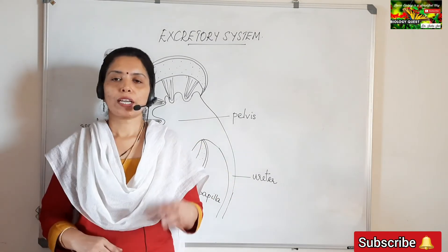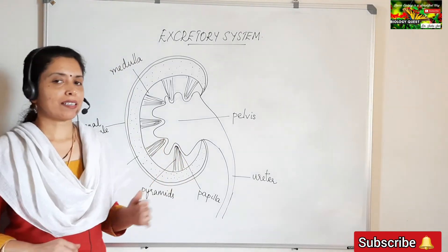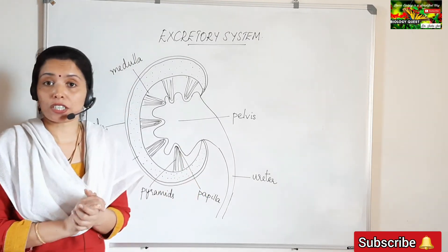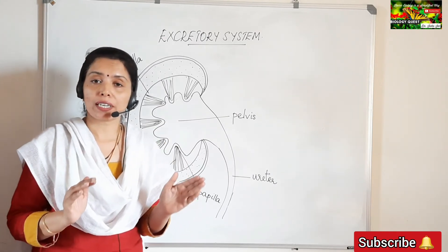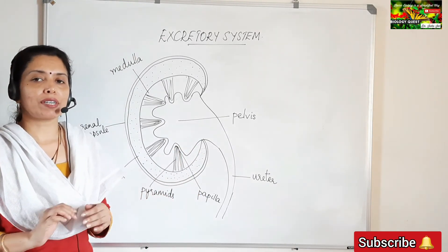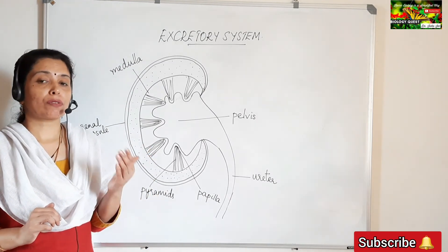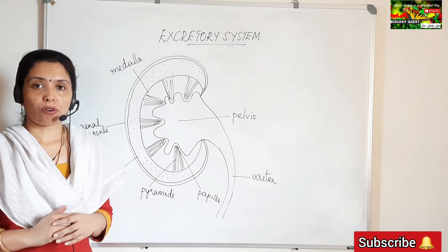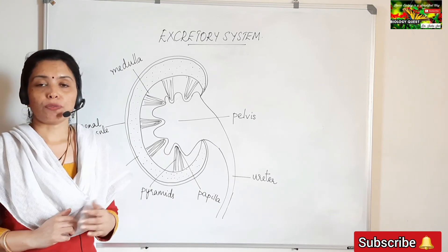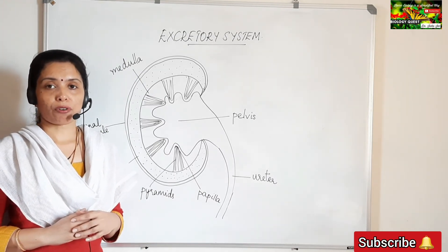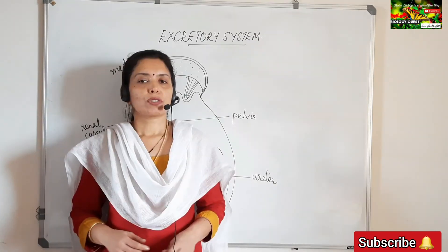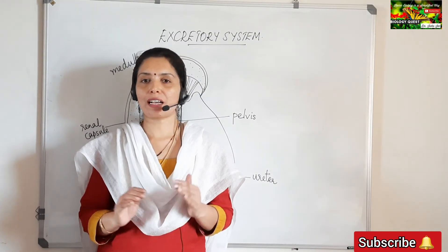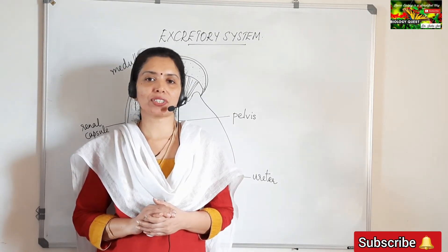The kidneys are the primary excretory organs. The basic structural and functional unit of the kidney is called the renal tubule, also known as the kidney tubule, uriniferous tubule, or nephron. In the next video we shall discuss the structure and functioning of the nephron. I hope this session is clear. Please ask your doubts and give suggestions in the comment section. Thank you.